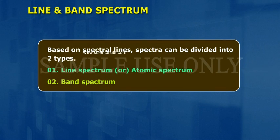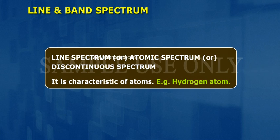Line and Band Spectrum. Based on spectral lines, spectra can be divided into two types: 1. Line Spectrum or Atomic Spectrum, 2. Band Spectrum.